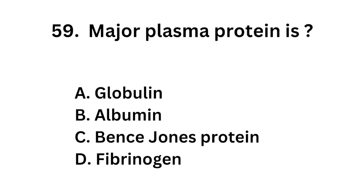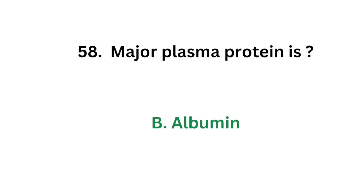Question number 59: What is the major plasma protein? Option A: Globulin. Option B: Albumin. Option C: Bence Jones protein. Option D: Fibrinogen. The correct answer is Option B: Albumin. The major plasma protein is albumin.